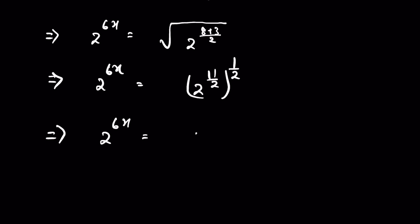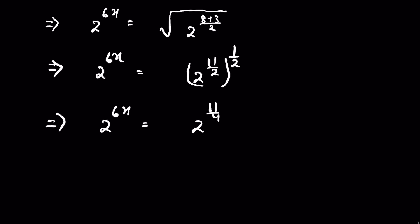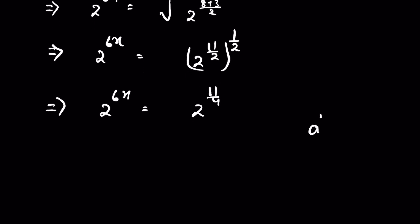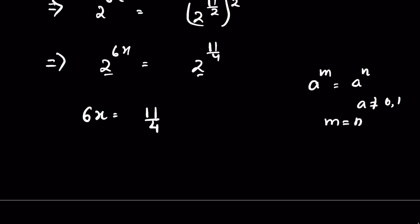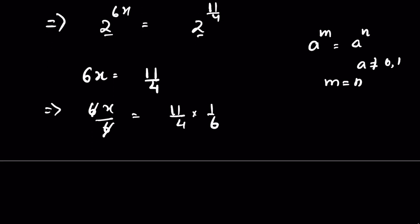So 2 raised to the power 6x is equal to 2 raised to the power 11 upon 4. Now, if a raised to the power m equals a raised to the power n, and a is not equal to 0 or 1, then m equals n. Since both bases are the same, 6x equals 11 upon 4. Dividing both sides by 6, the 6s cancel, giving x equals 11 upon 24.